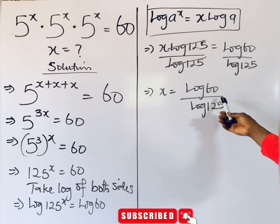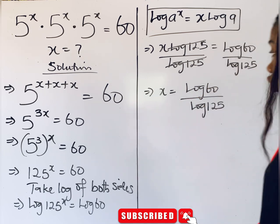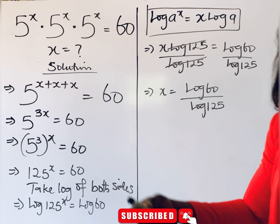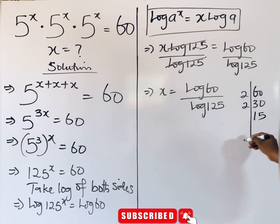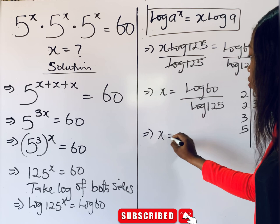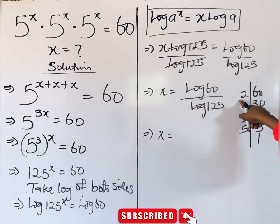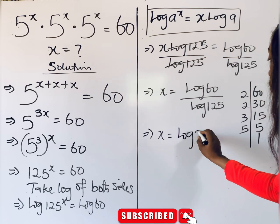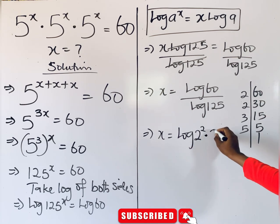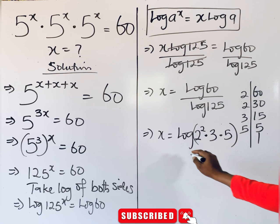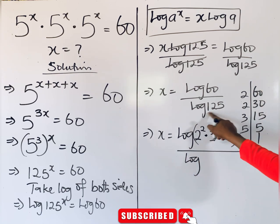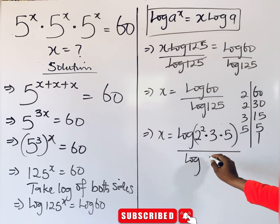Don't be too quick to leave your answer like this — it's not simplified yet. To reduce it, we leave our answer in prime product form. Note that 60 = 2 × 2 × 3 × 5 = 2² × 3 × 5, and 125 = 5³. So x = log(2² × 3 × 5) / log(5³).